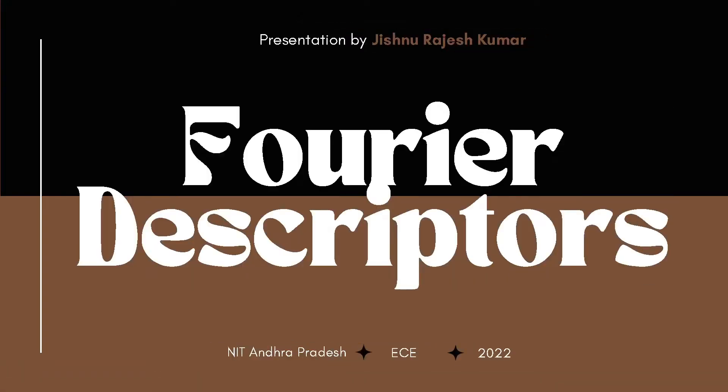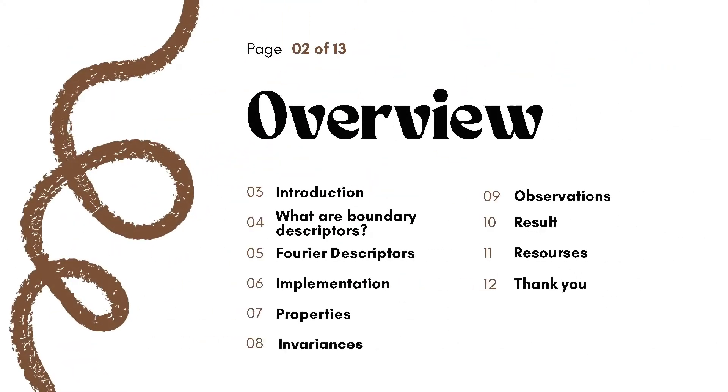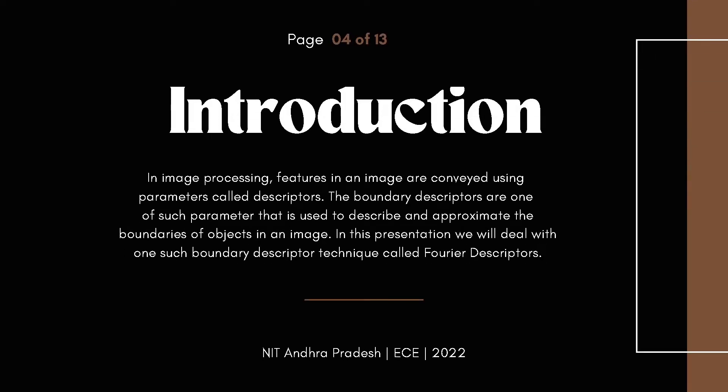Hello everyone, my name is Chishnan Rajesh and in this video I will be talking about Fourier descriptors. In image processing, features or shapes in an image are conveyed using particular parameters called descriptors. Boundary descriptor is such a class of parameter that are used to describe or in some cases approximate the boundaries of objects in an image. In this presentation, we will be talking about a particular boundary descriptor technique called Fourier descriptors.